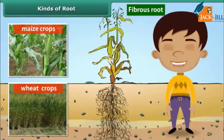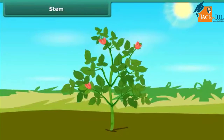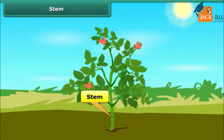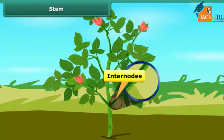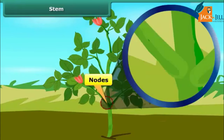A fibrous root has no main root. The other important part of the plant body is the stem. The stem forms the main axis of the plant body, which grows towards light and away from gravity. It holds the plant body upright, bears leaves, flowers, and fruits, and exposes them to sunlight and air. The stem is divided into nodes and internodes. Nodes are the swollen portions of the plant that hold buds, which grow into leaves, flowers, etc.